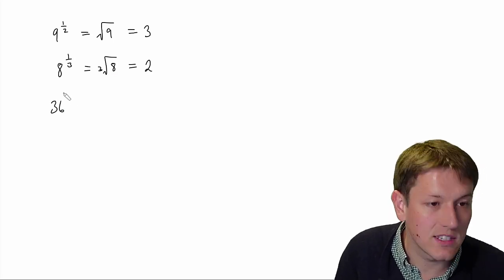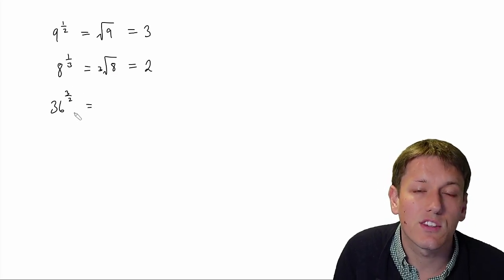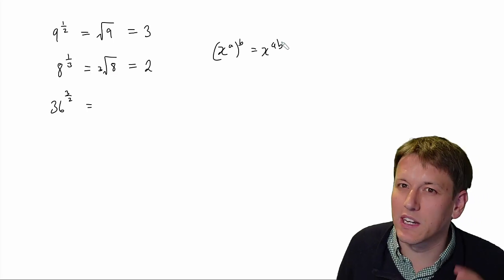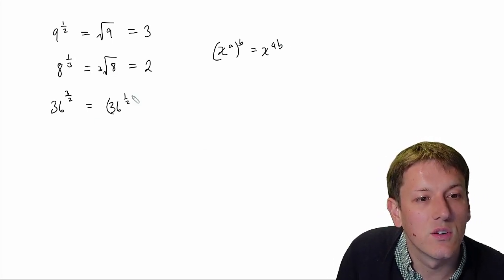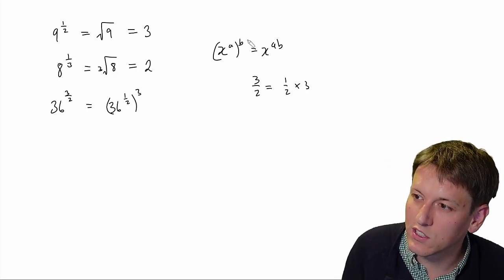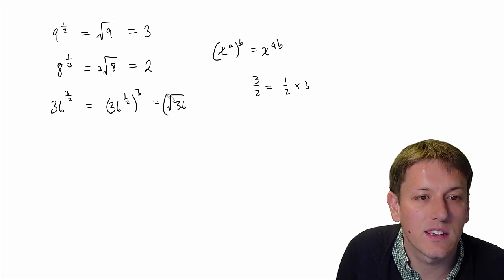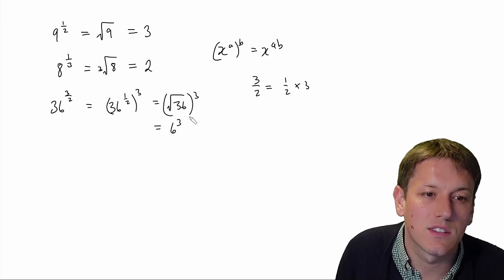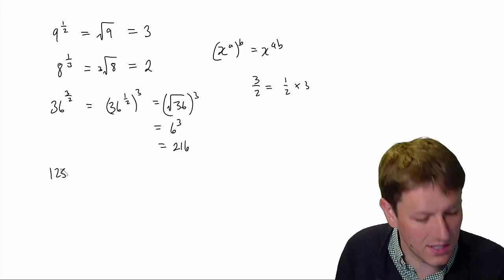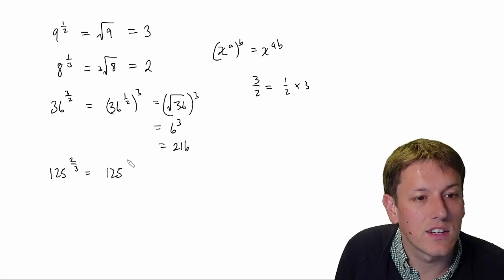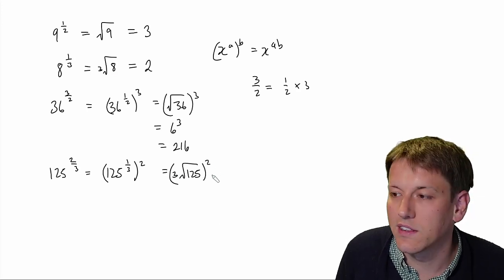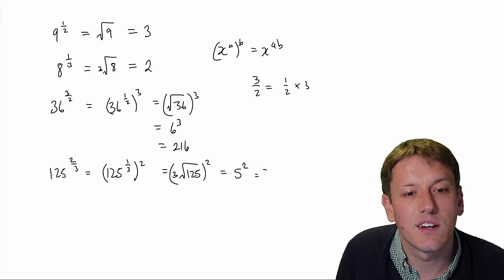We could do something slightly more complicated: 36 to the 3 over 2. The way I deal with a fractional power like this is to split it up using the rule that X to the A, all to the power of B, is X to the A times B — but used in reverse. So this is 36 to the 1 half, all cubed: 36 to the 1 half is the square root of 36, which is 6. So I just need 6 cubed, and 6 cubed is 216. Another example: 125 to the 2 thirds. I can write this as 125 to the 1 third squared. 125 to the 1 third is the cube root of 125, which is 5, and 5 squared equals 25.